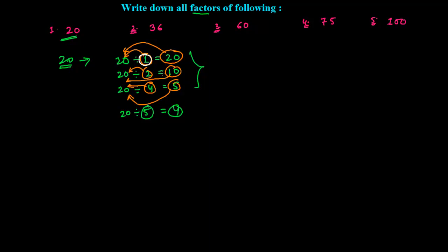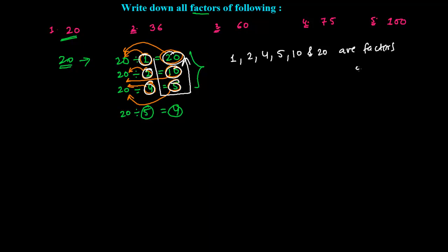Whatever I have circled, those numbers are the factors of 20. We always come in the U shape. So 1, 2, 4, 5, 10, and 20 are the factors of 20. Always remember: 1 is always the factor of every number — any number you choose in the entire number system.